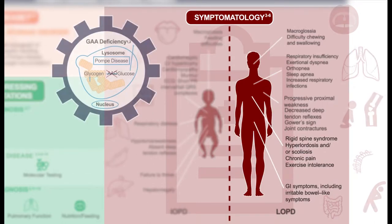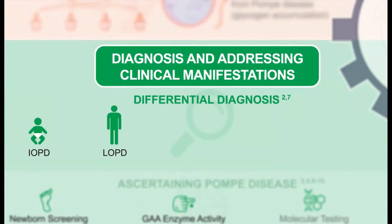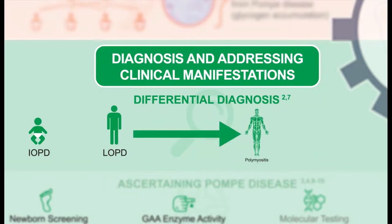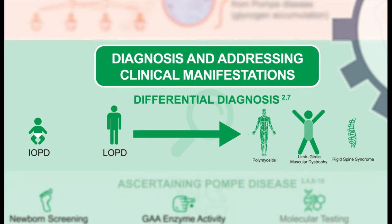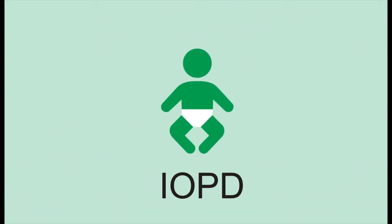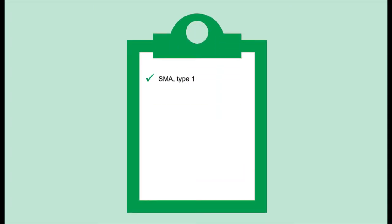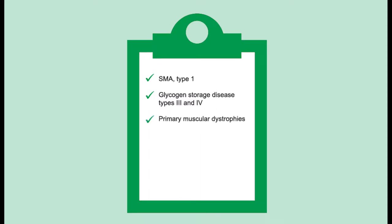There are presentations that can be unusual and seen in late-onset Pompe disease. Frequently, these patients have been misdiagnosed as having polymyositis. They can have symptoms of limb girdle muscular dystrophy and also rigid spine syndrome. For the differential diagnosis of infantile-onset Pompe disease, type 1 SMA can be on the differential because of the weakness, as well as glycogen storage diseases type 3 and 4, primary muscular dystrophies, and mitochondrial myopathies.